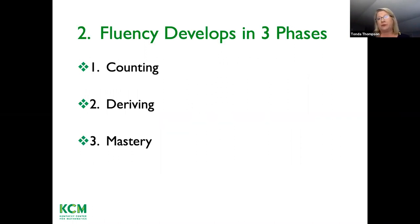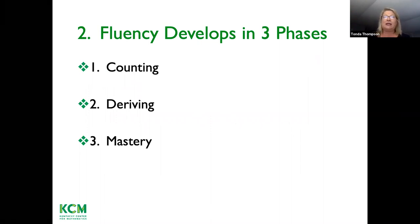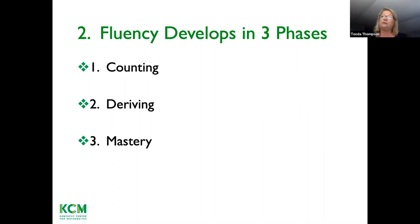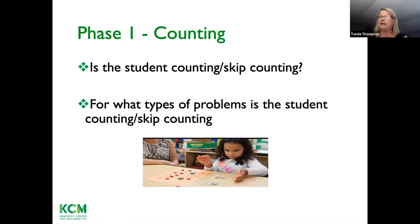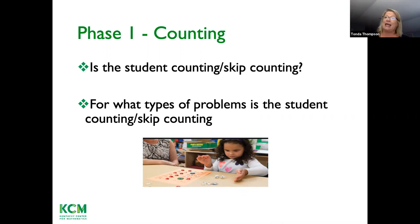Fluency develops in three phases: the counting phase, the deriving phase, and the mastery phase. It's important to know what I'm wanting to assess in order to guide instruction. Phase one is when the student is doing some kind of counting — it could be counting on, counting all, or skip counting. When I'm giving that assessment, I'm looking to see how many kids are still in phase one, still having to do some kind of counting to figure out how many there are.